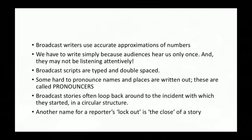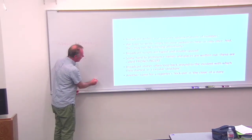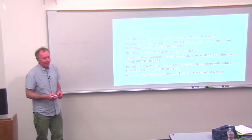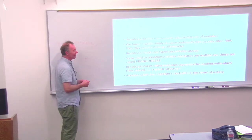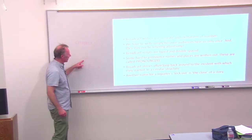Difficult names — place names, people's names, or hard-to-pronounce words — are written out phonetically. Those are called pronouncers. For instance, if someone didn't know how to pronounce 'cashew,' that would be a pronouncer. Broadcast stories often loop back around to the incident with which they started — a circular structure. We might start with a guy who's lost all his money at the casino, go out and talk about gambling addiction, see other people, and then come back to him — now he's entered a program to deal with his addiction. We come full circle back to where we started. It's not really an incident, it's a person, but the same principle of circularity applies.